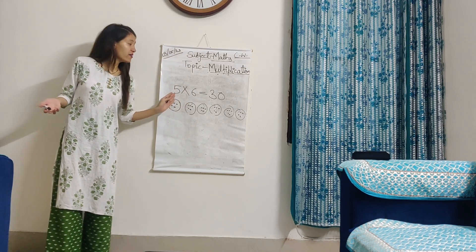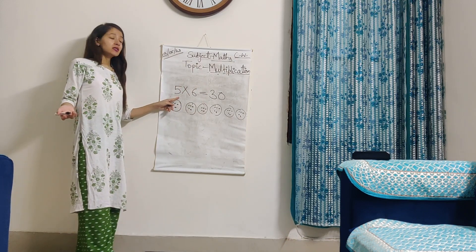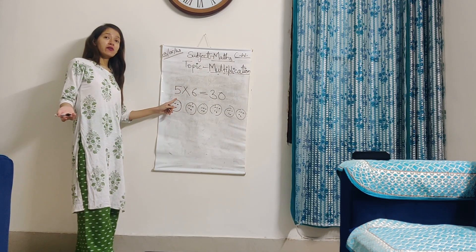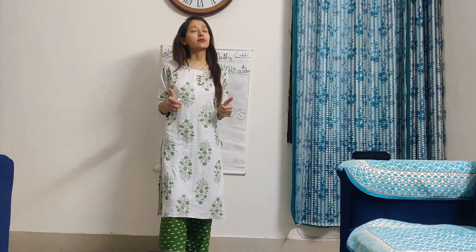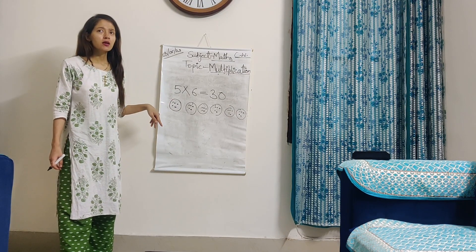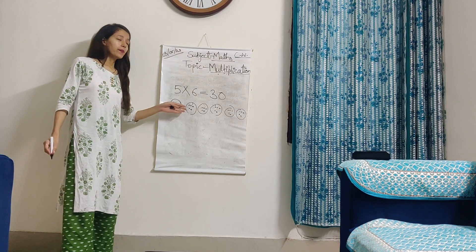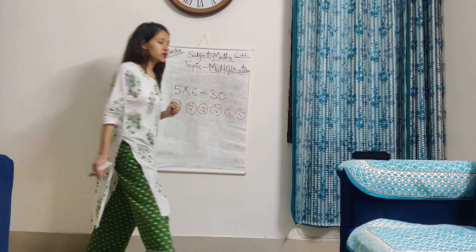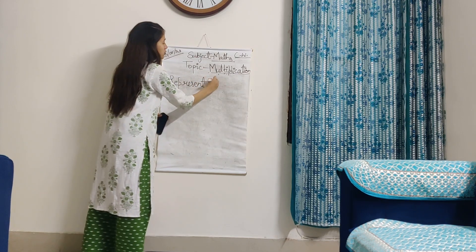5 multiplied by 6 is 30. It means 6 groups of 5. Have you understood? The first number represents the number of things and the second number represents the number of groups. I am going to write down some tables and you have to find out the answer with the help of pictorial representation.